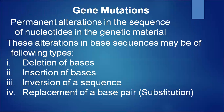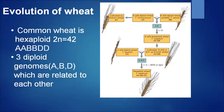The last type is segmental allopolyploidy. Though some allopolyploids contain different genomes, not all are totally different — they have partial homology between them, and therefore these genomes show pairing behavior. Because of this partial homology, they are called segmental allopolyploids. Potato (Solanum tuberosum) is a good example. Autopolyploids play a more important role in the evolution of species than segmental allopolyploids.